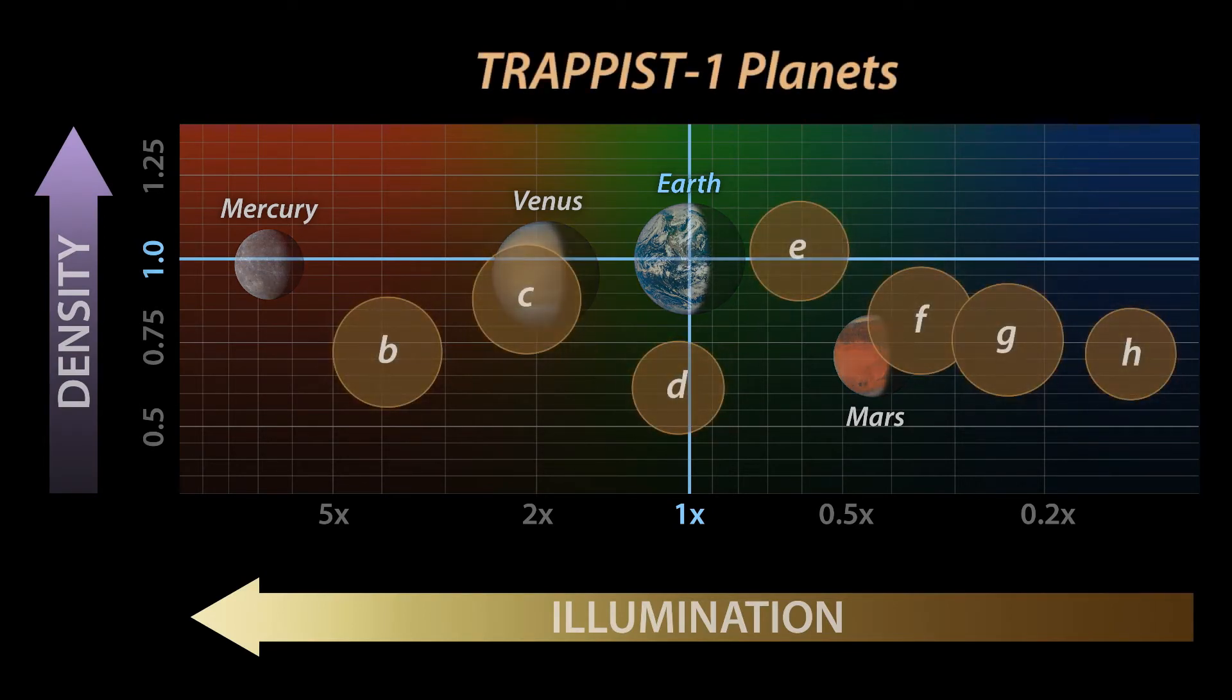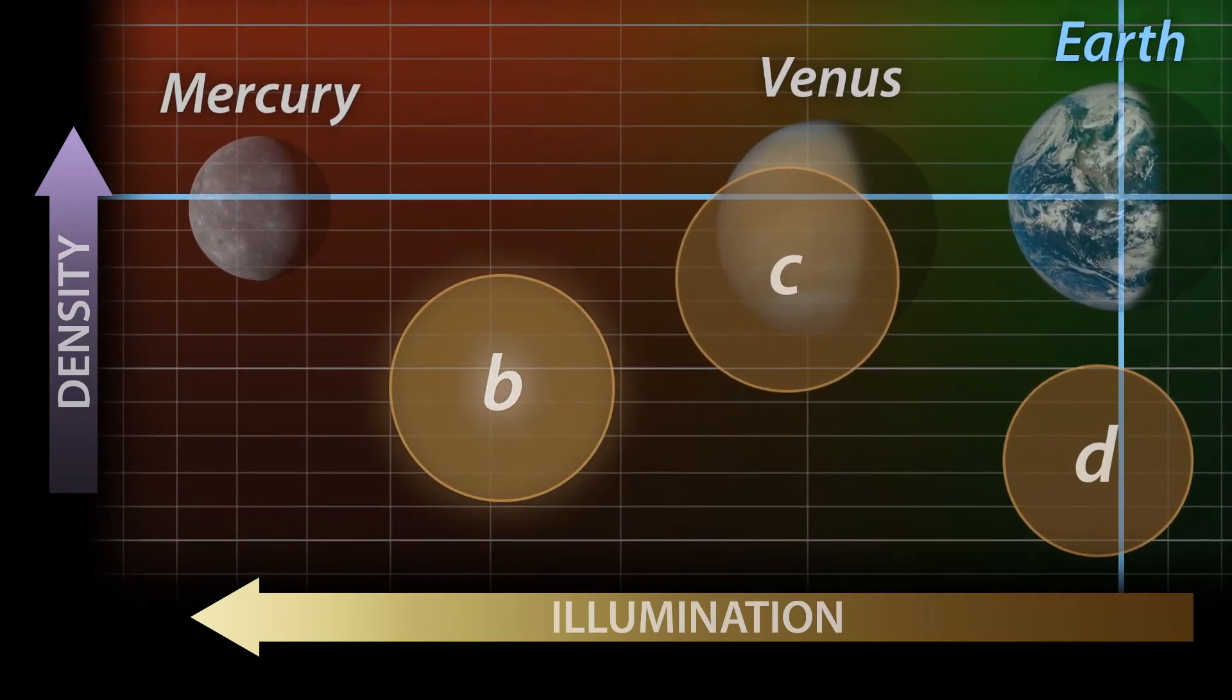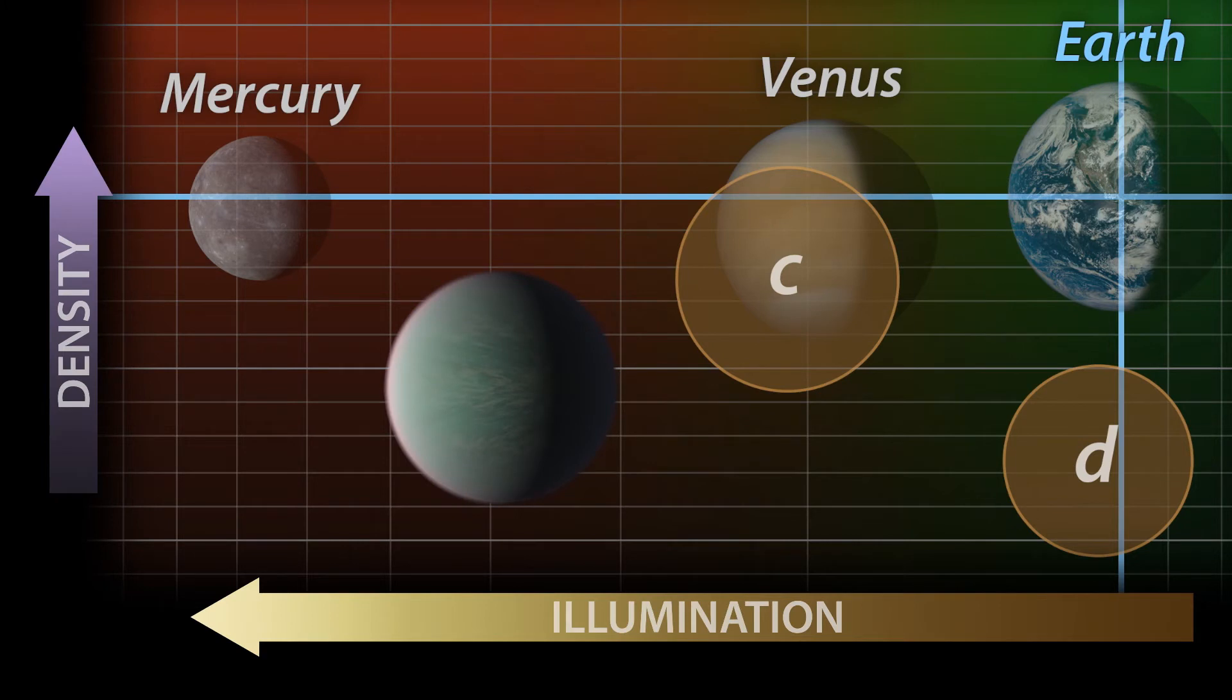Now we can add the TRAPPIST-1 planets and compare them. You might first note that while TRAPPIST-1b is a bit on the warm side, c is a pretty close match for Venus in all of these properties. As far as this study goes, they're nearly twins.